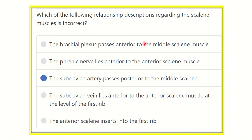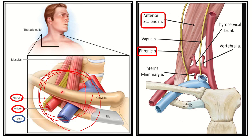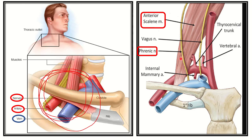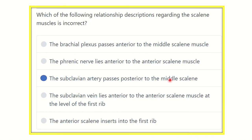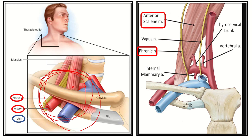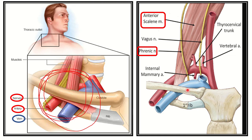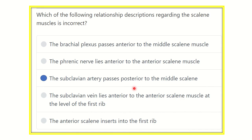Now let's see which option is not true. First, the brachial plexus passes between the anterior and middle scalene - that is true. Second, the phrenic nerve lies anterior to the anterior scalene - that is true, we can see this in the picture. Third, the subclavian artery passes posterior to the middle scalene - not true, because it lies anterior to the middle scalene. Fourth, the subclavian vein lies anterior to the anterior scalene at the level of the first rib - true, we can see that in the picture.